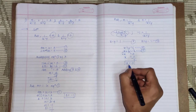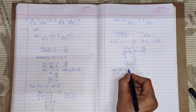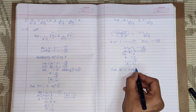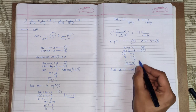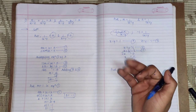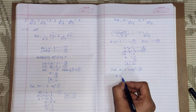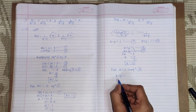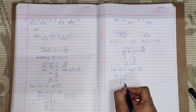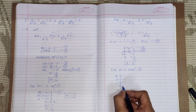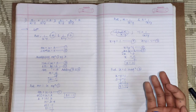Now put x equals 0 into the fourth equation: x minus y equals 1. Substituting x equals 0 gives minus y equals 1, therefore y equals minus 1. We have now got the values of x and y.